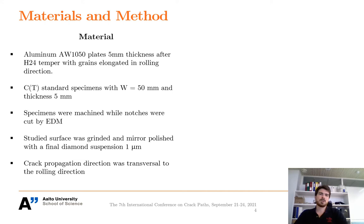In order to provide this study, we chose technically pure aluminum 1050 alloy in the shape of plates with 5 mm thickness subjected to H24 temper, which means that the grains were elongated in the rolling direction. So we chose the compact tension standard specimens with W equal to 50 mm. Specimens were machined while the notches were cut by electric discharge machining. Since we're providing an optical observation of the crack tip propagation, the study surface was ground and mirror polished with a final diamond suspension one micrometer. And the crack propagation direction was transversal to the rolling direction.